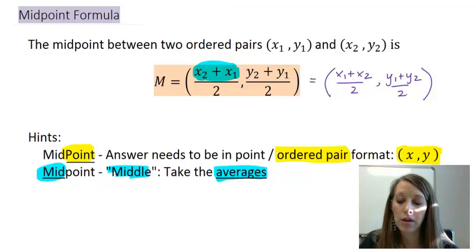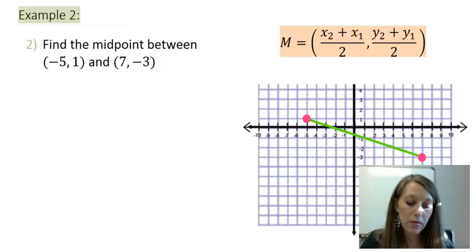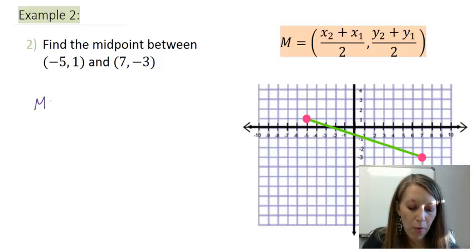So let's see an example here in which we use the midpoint formula. So I have this drawn up here on the right, and we'll come back and we'll double check our answer by graphing it. So find the midpoint between my two ordered pairs, negative 5, 1, and 7, negative 3.